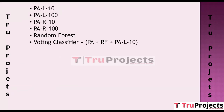PAL10 — Passive Aggressive with Large Margin 10 — is another variation of the Passive Aggressive algorithm. It aims to provide a larger margin of error tolerance, making it less aggressive in updating the model parameters compared to PA1. This helps achieve a balance between adaptation to new data and maintaining stability.